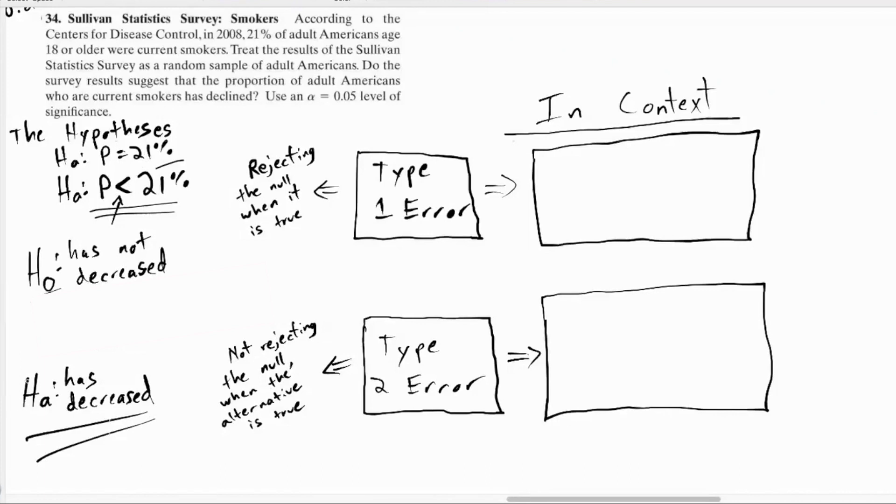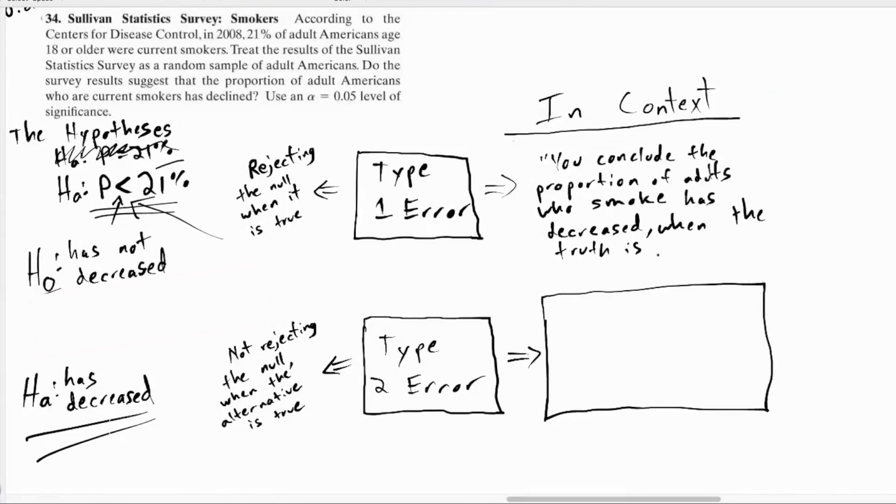A type one error would be that you reject the null, you say has decreased when what's true? But it hasn't decreased. Yeah, that's great. When the truth is it hasn't. What would the type two error look like? You conclude that the proportion of adults who smoke has not decreased when the truth is that it has decreased. Exactly. That false negative.